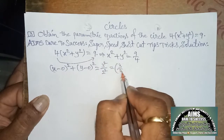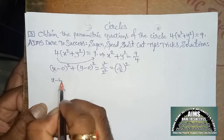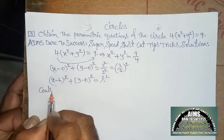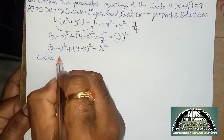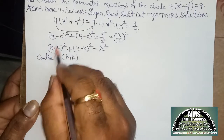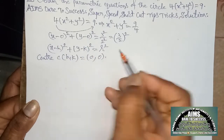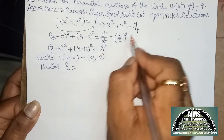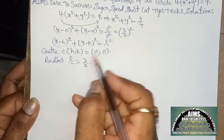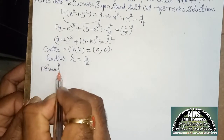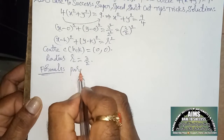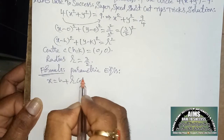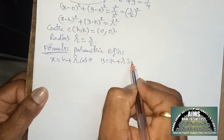So 3²/2² can be written as (3/2)². Comparing with x − h)² + (y − k)² = r², we get center C(h, k) where h = 0 and k = 0. Now writing the radius: r² = (3/2)², so r = 3/2. The simplest parametric equations formula is: x = h + r·cos θ and y = k + r·sin θ.